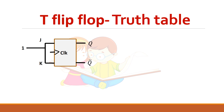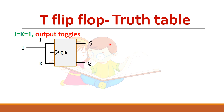In JK flip-flop, we have studied that when J equal to K equal to one, the output toggles. That is when the output is zero, the next output will become one, and if the present output is one, the next output will be zero. So it toggles when J and K are equal to one.